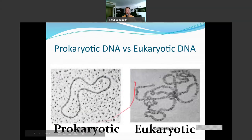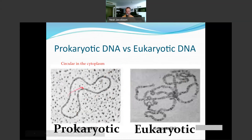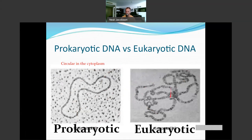Prokaryotes have circular chromosomes that exist in the cytoplasm, because prokaryotes don't have a nucleus — they have no place to keep the DNA other than the cytoplasm. Eukaryotic chromosomes, by contrast, are linear — there's a definitive start and end. They exist in the nucleus. The point is that eukaryotic chromosomes are linear with a start and a finish to each chromosome.